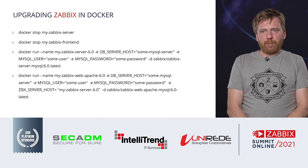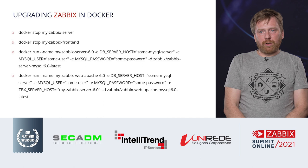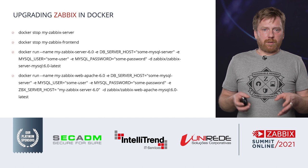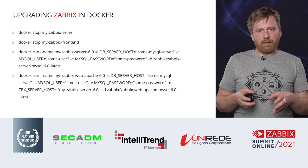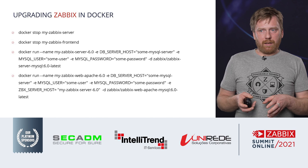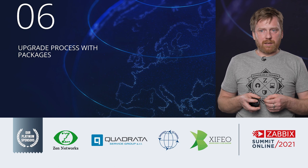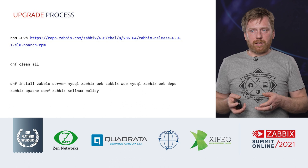For Docker deployments, the simplest option is: stop the running containers — Zabbix server, Zabbix front-end, and any proxies — then start a version 6.0 container connecting it to the same database. The same automatic DB schema upgrade will occur. You still need to check your DB version beforehand, but there's no concern about supported operating systems or installed packages — it's all included in the container.